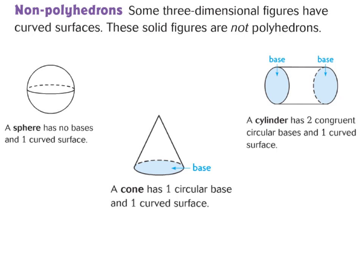The other family I want to share with you are non-polyhedrons — figures that have curved surfaces. These solid figures are not polyhedrons; a polyhedron cannot roll and is made up entirely of polygons. Here are three main non-polyhedrons: a sphere has no bases and just one curved surface, so it can continuously roll. A cone has one circular base and one curved surface. A cylinder has two congruent circular bases and one curved surface, so the bases are circles and it can roll on the curved surface.